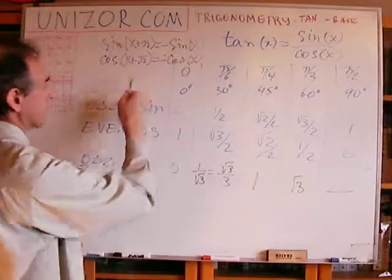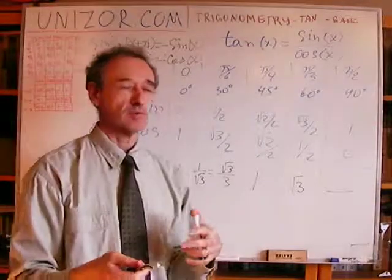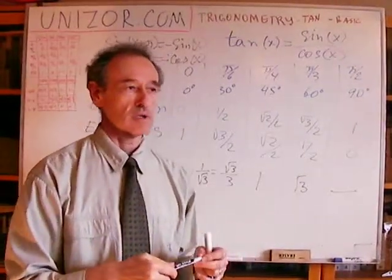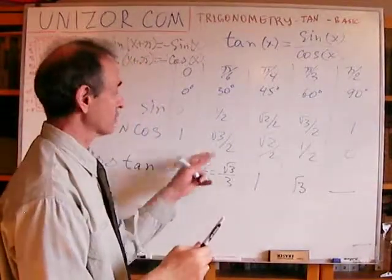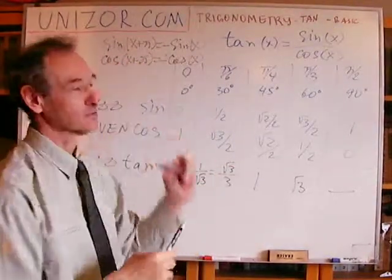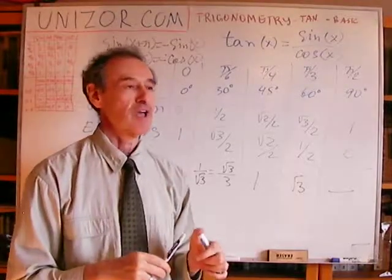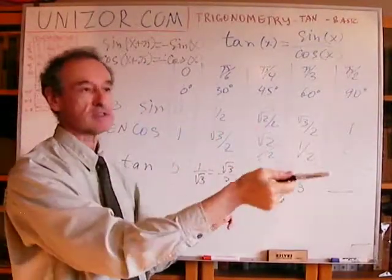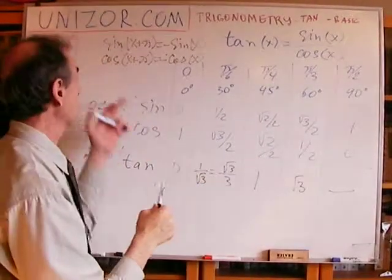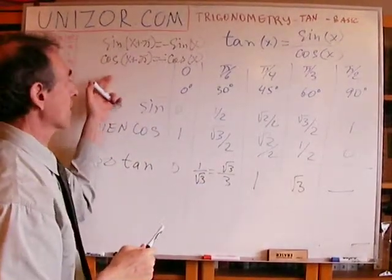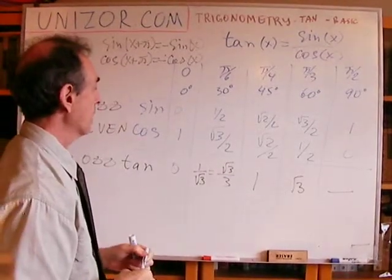Now, why is that? Well, again, back to the unit circle, which I promised not to mention today. Anyway, it's not mentioned relative to tangent, it's mentioned relative to sine and cosine, so I'm excused. So, if you add pi, you go from the first quadrant to the third, when both coordinate and abscissa are negative, so that's obvious.